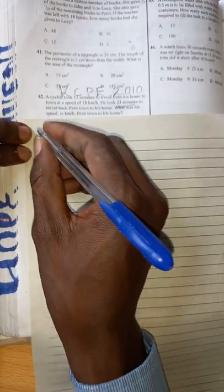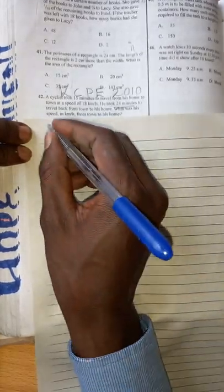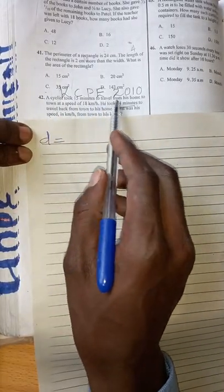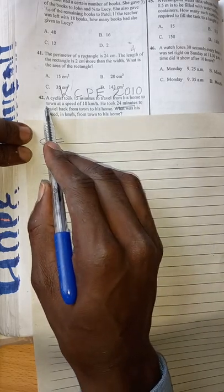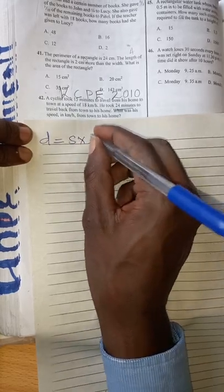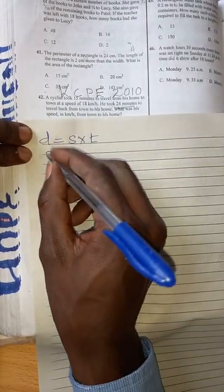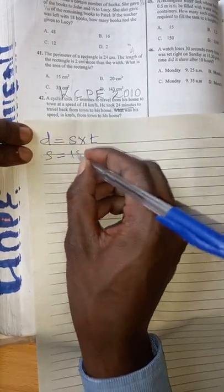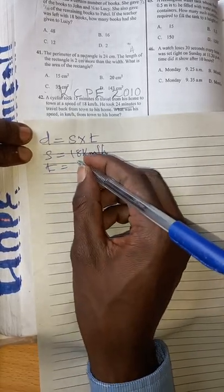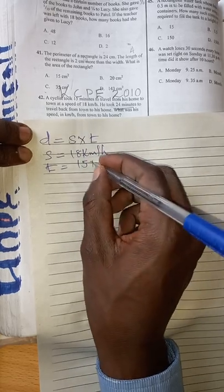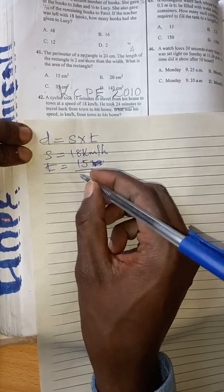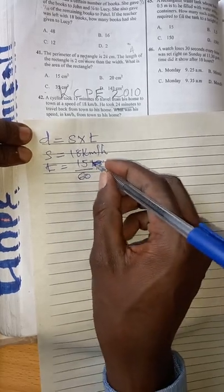So we start by finding the distance from home to town. The distance is gotten by speed times time. Our speed is 18 km per hour and our time is 15 minutes. And because this one is given in hours, you put this 15 over 60 to change into hours.